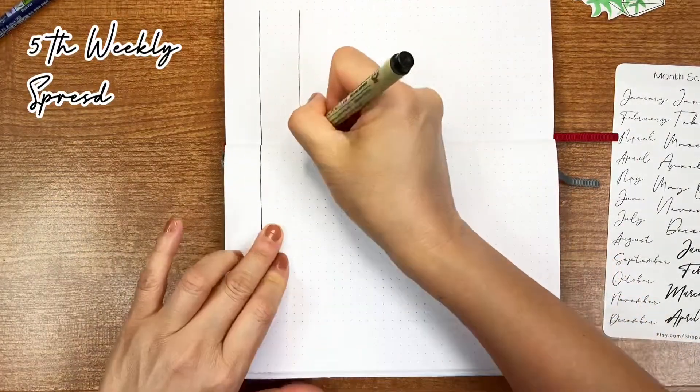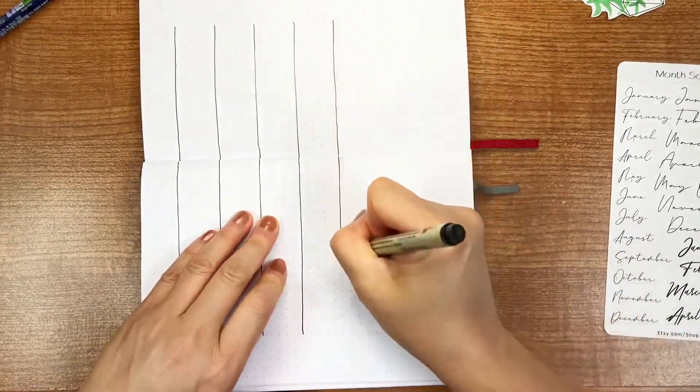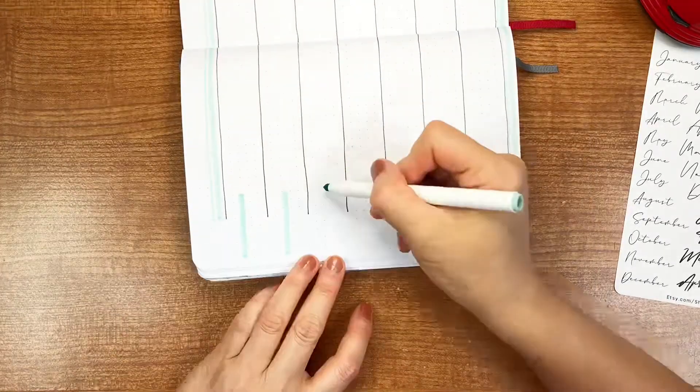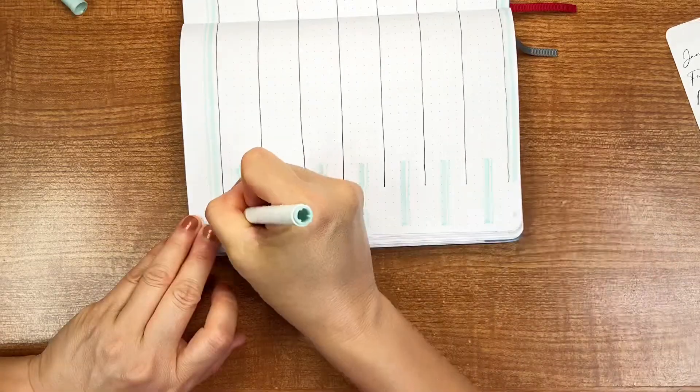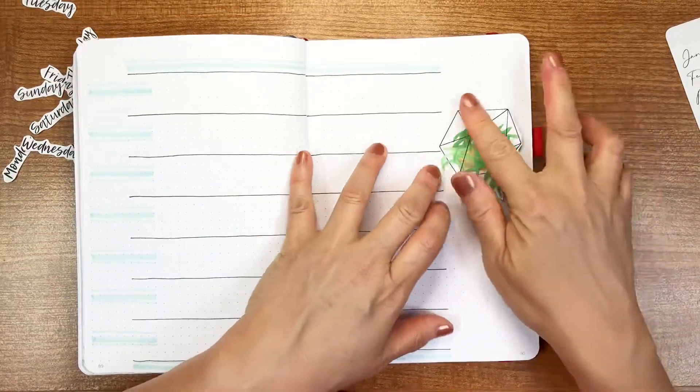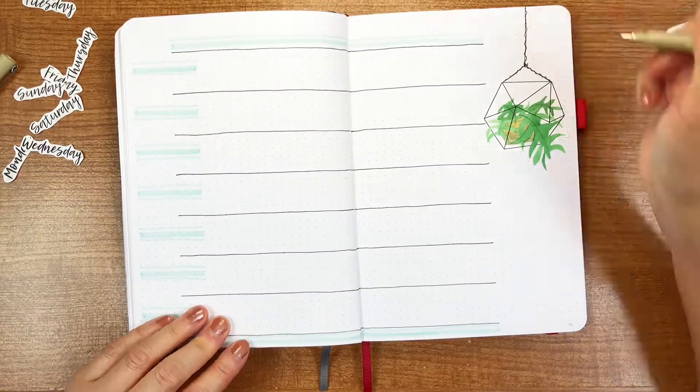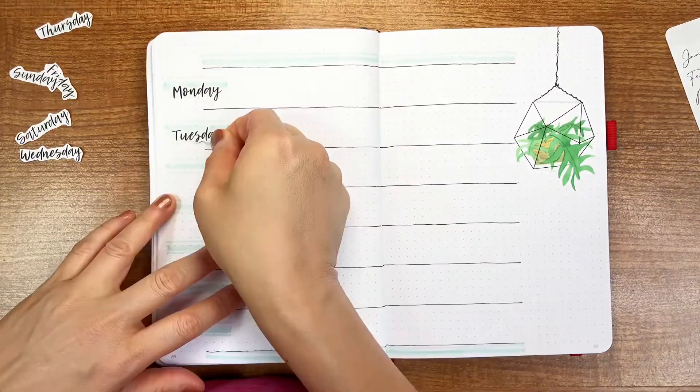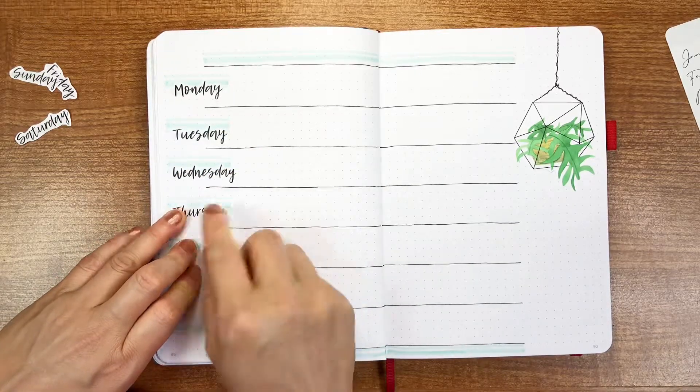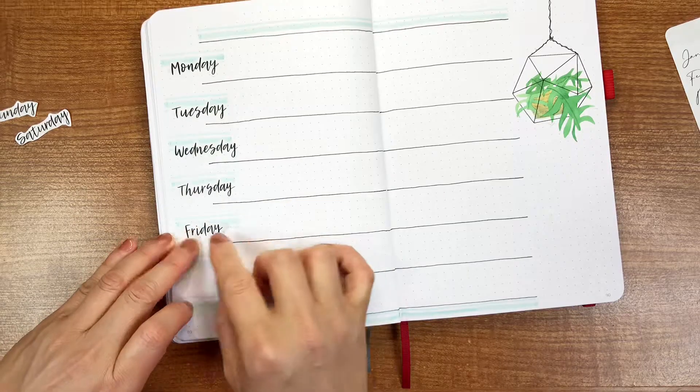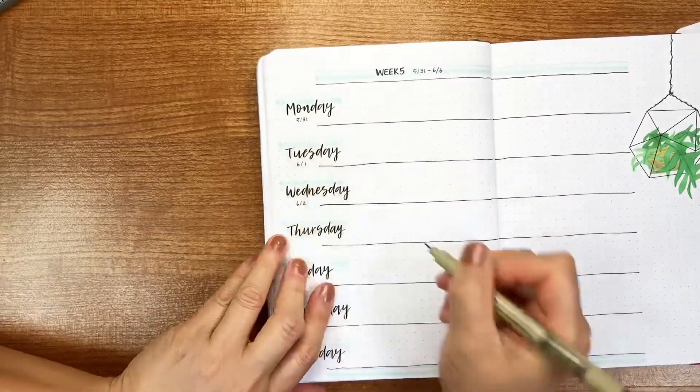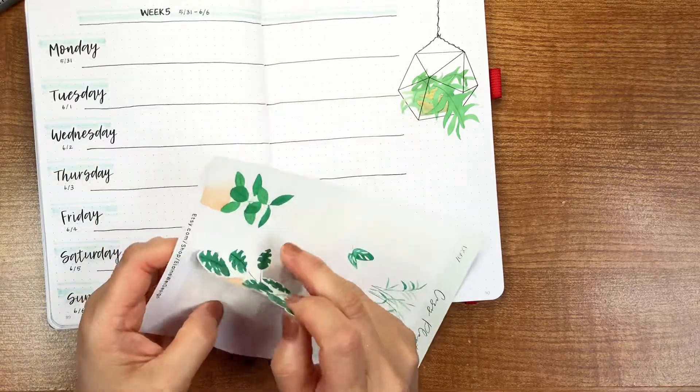Finally it's my fifth weekly. I'm still using one of the hanging plant stickers from my mini greenhouse printable to decorate this page. Then I'm drawing some strings to show more detail for this hanging plant. Then I'm adding days of the week stickers. Lastly I'm adding one more plant sticker. That's it for this page.